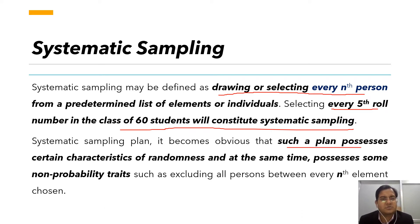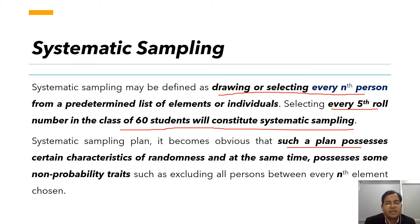If you have a clear idea about probability and non-probability, there should be no confusion. In systematic sampling, we skip all individuals in between — for example, from first to fourth — and then select the fifth. In this case, we are not giving equal opportunity to every individual in the population. There is no characteristic of randomness, which is why systematic sampling is considered non-probability sampling.